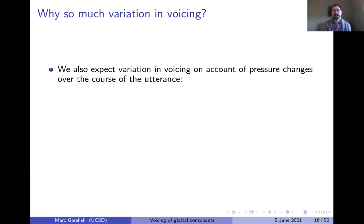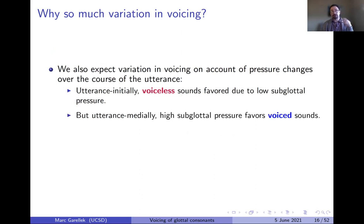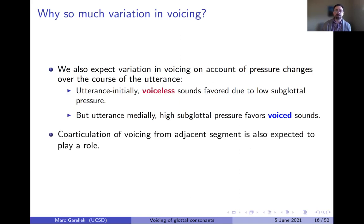We also expect variation due to pressure changes over the utterance. Utterance-initially, voicelessness is favored because subglottal pressure is low, making it harder to initiate voicing. Utterance-medially, where subglottal pressure is high, voicing is favored over voicelessness unless additional articulations render the sound voiceless. Adjacent to a voiceless sound, a voiced sound is also likely to be slightly less voiced — co-articulation is another factor.